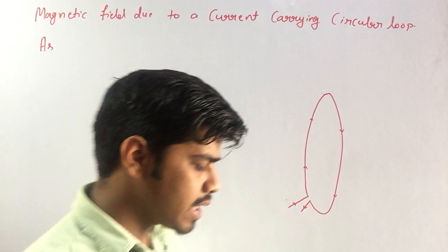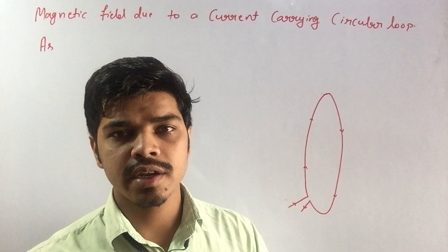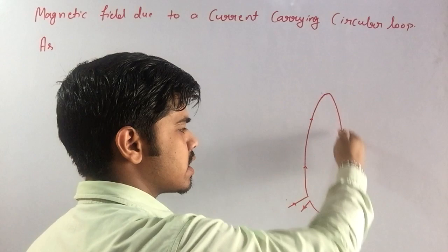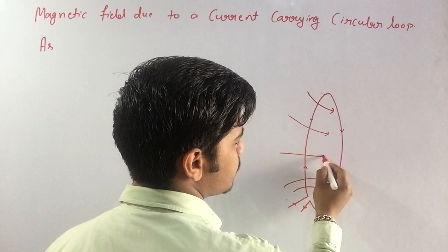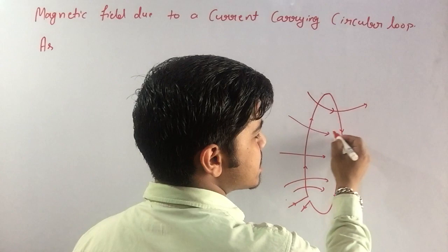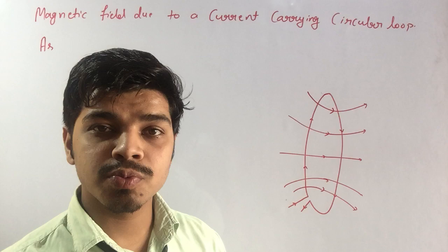As we know, if a straight wire carries a current, a magnetic field will be produced. The same case applies here. If a circular current flows, the magnetic field will be produced. In the clockwise case, the field will be inward; in the anticlockwise case, it will be inverted — meaning outward. Inward magnetic field indicates south pole, and outward magnetic field indicates north pole.